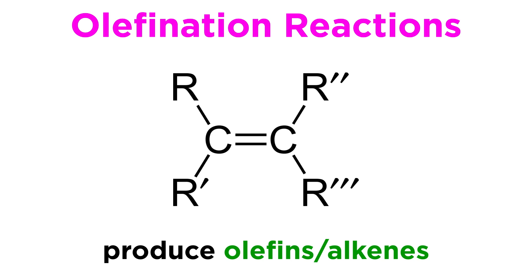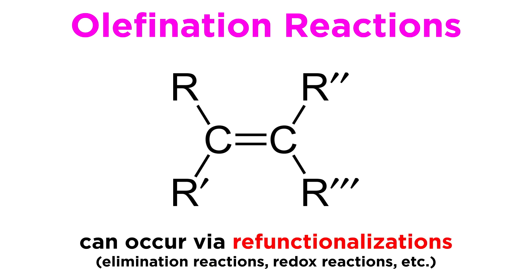Olefins, also known as alkenes, can of course be made by a number of routes which do not involve skeletal changes, but simply refunctionalizations, like elimination reactions or redox reactions.